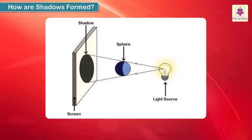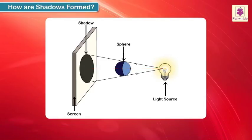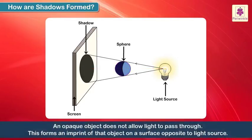How are shadows formed? Shadows are formed because light travels in a straight line. An opaque object does not allow light to pass through. This forms an imprint of that object on a surface opposite to the light source.